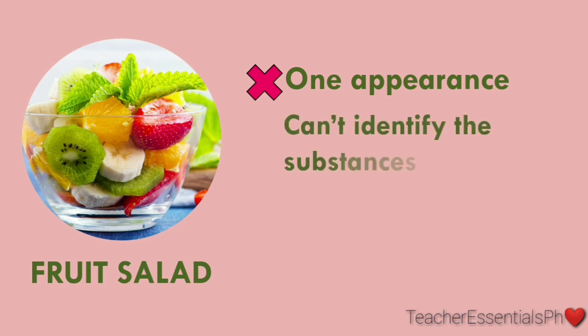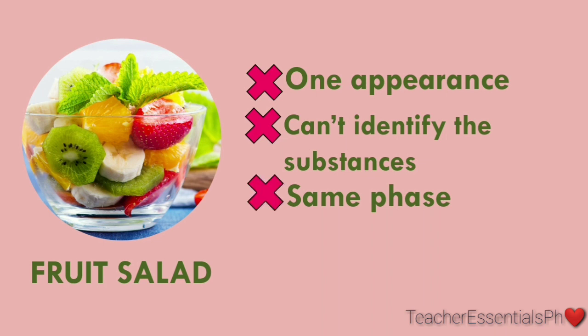Can you not identify the substances present by your naked eye? No. We can identify where the strawberry, the orange, the kiwi, or the banana is. So we can easily identify this one. Does it have the same face? Just like the pancit, it doesn't have the same face. Meaning, we can see a lot of solid substances mixed in here.